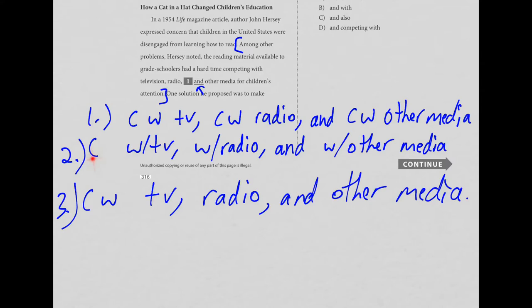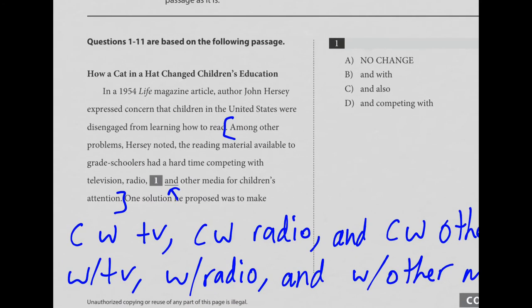You could say 'competing' at the start and then 'with TV, with radio, and with other media' — the preposition goes with all three objects. Probably the best way is to have the verb and the preposition at the beginning, then just list your objects: TV, radio, and other media. If you only have the preposition with two of them, that breaks parallelism — that's what's going on in both B and D. Choice C is also incorrect because 'also' is redundant when giving a list ending with 'and.' A, no change, was the best choice.